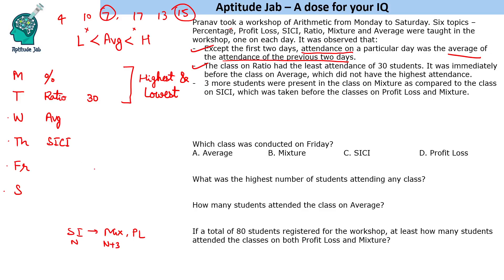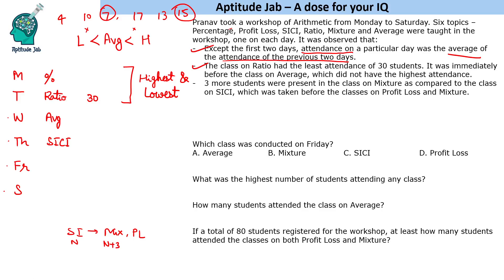Now we have to use this relation to find the values. If we take a variable X here, we will get fractions like X/2, X/4, X/8, which cause problems. So it is better to take 16X as the variable here, so that all the variable parts come out as integers. The best strategy is to take Monday's attendance as 16X.